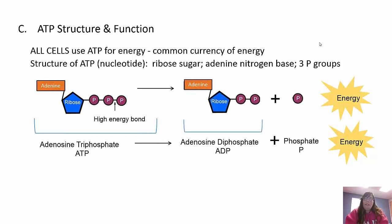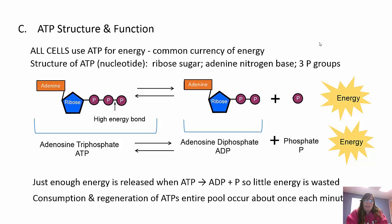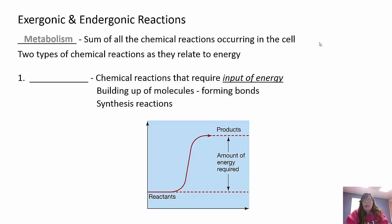ATP is the energy of our cells. Its structure is adenine, ribose, and three phosphates. That last phosphate is high energy; when it releases, it gives off energy and forms ADP - adenosine diphosphate. It goes back and forth: ATP breaks the bond and gives off energy; adding the phosphate back requires energy. Just enough energy is released so we don't waste anything. ATP is consumed and regenerated about once every minute. You always need energy, even when sleeping, because your heart's always beating and your lungs are always breathing.